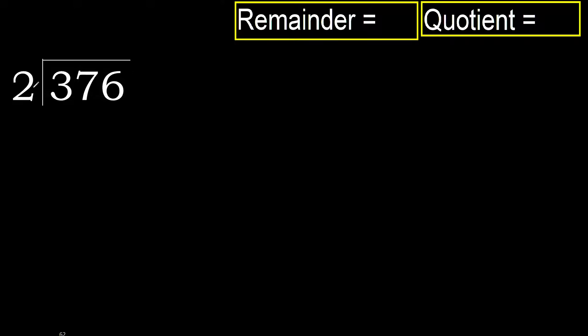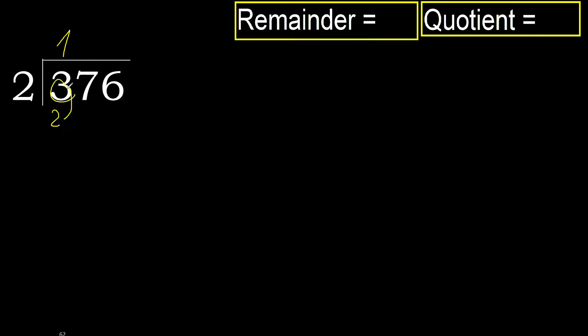376 divided by 2. 3 is not less, therefore with 3, 2 multiplied by which number is nearest to 3 but not greater? 2 multiplied by 2 is 4 — 4 is greater. 2 multiplied by 1 is 2, which is not greater.